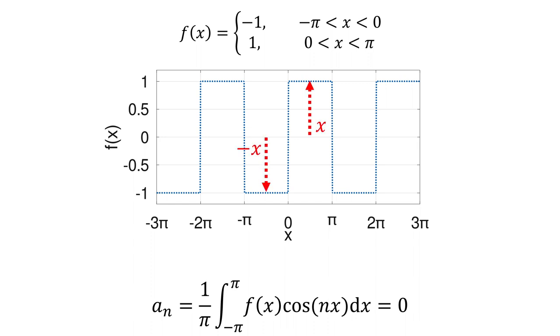However, since fx is an odd function, and cosine nx is an even function, fx cosine nx is an odd function. So the integral of fx cosine nx over a period will be 0. So an equals 0.